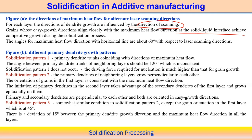If the maximum heat flow direction and easy growth direction are aligned, then competitive grain growth occurs along this direction. That is true in the case of unidirectional laser scanning.